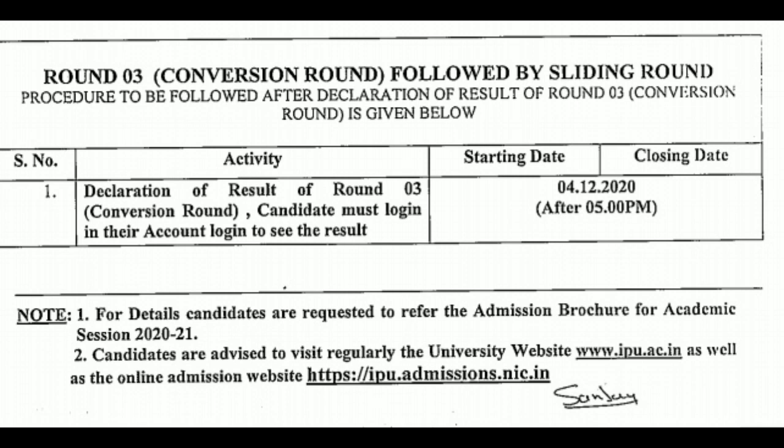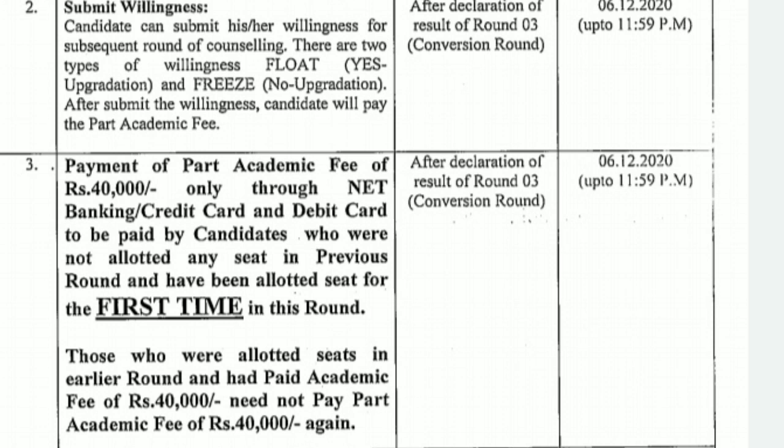This circular confirms Round 3, which is called the conversion round, followed by a sliding round. The declaration of the result of Round 3 conversion round will be today, the 4th of December, but after 5 PM. So after 5 PM today, you can check your Round 3 result.